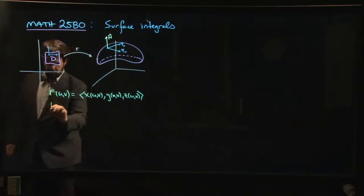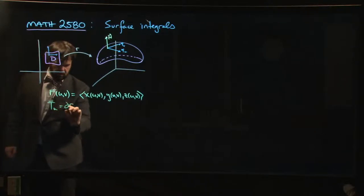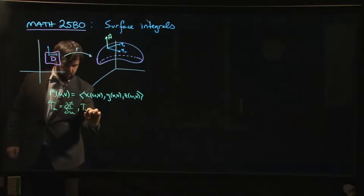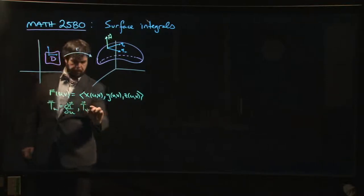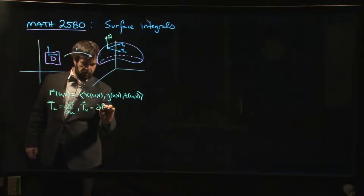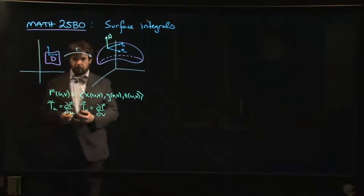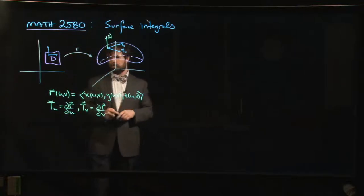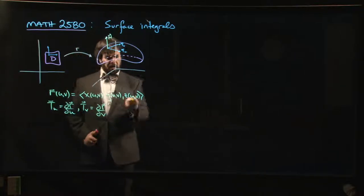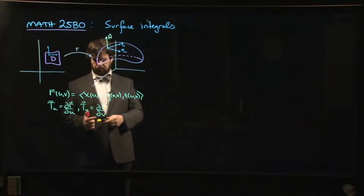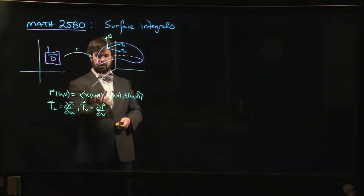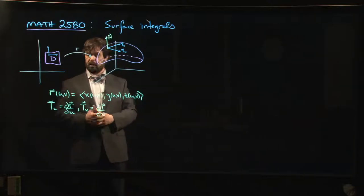Where we'll recall that this Tu is just dr/du, Tv is dr/dv. R is a vector-valued function of two variables. So when you take the partial derivative, you again get a vector-valued function. So you get a vector by taking partial derivatives of x, y, z with respect to either u or v.